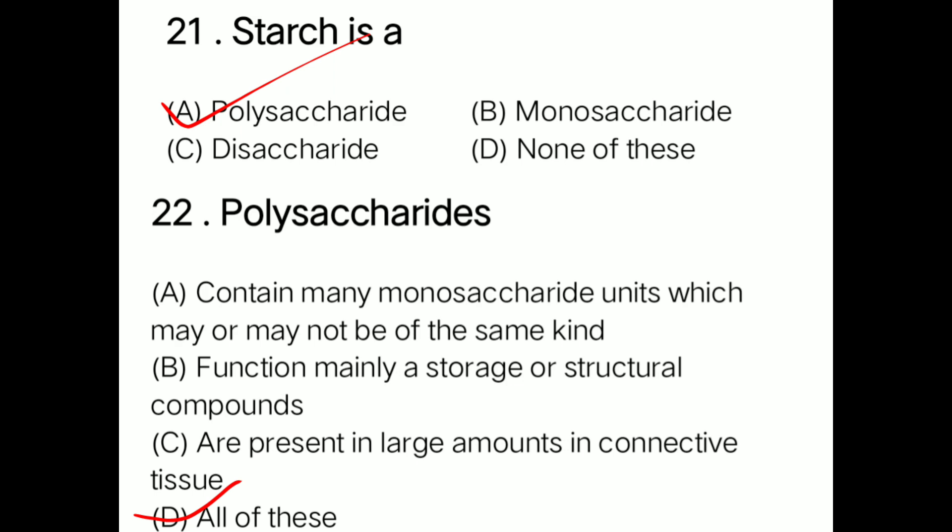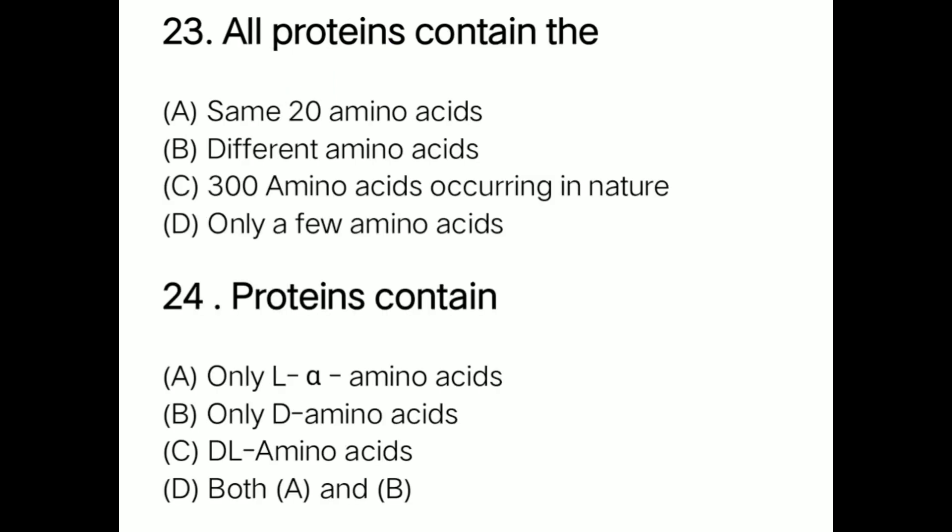Question: All proteins contain option A the same 20 amino acids, option B different amino acids, option C 300 amino acids occurring in nature, option D only a few amino acids. Correct answer is option A: all proteins contain the same 20 amino acids.